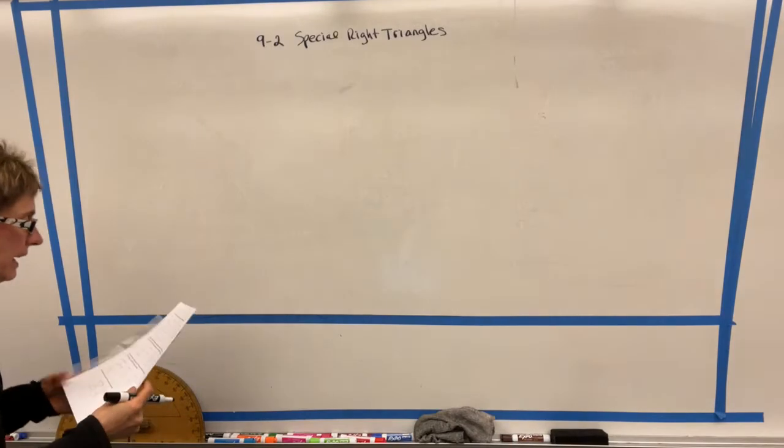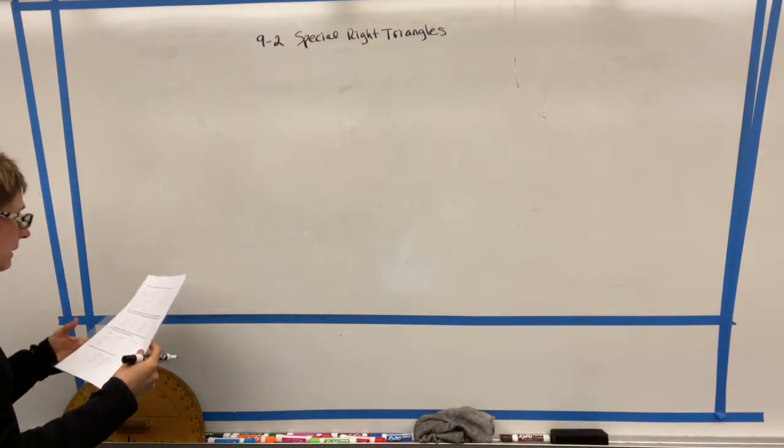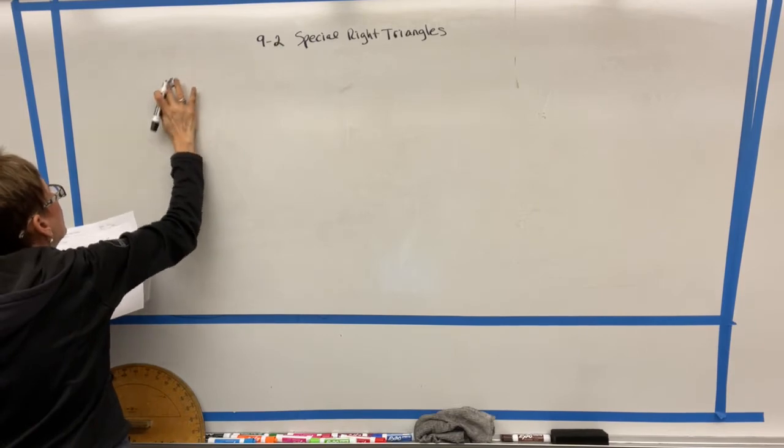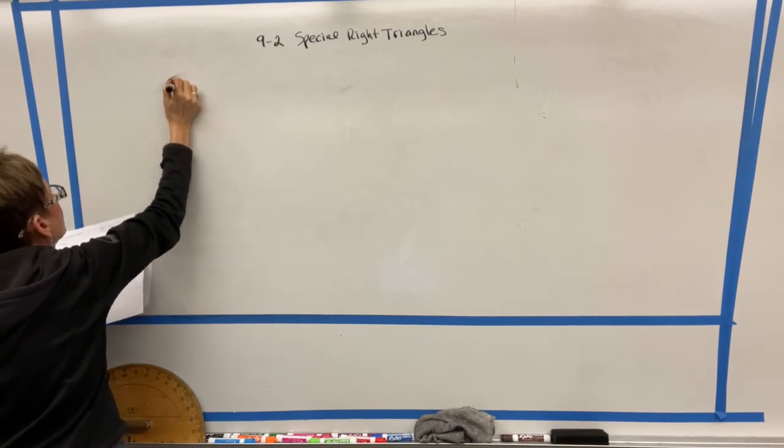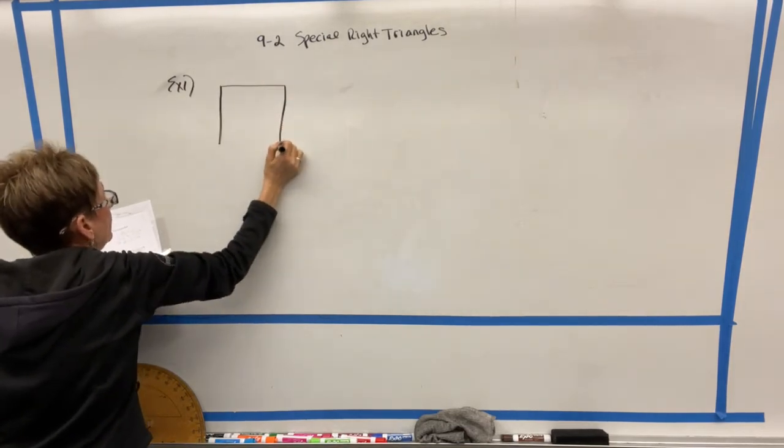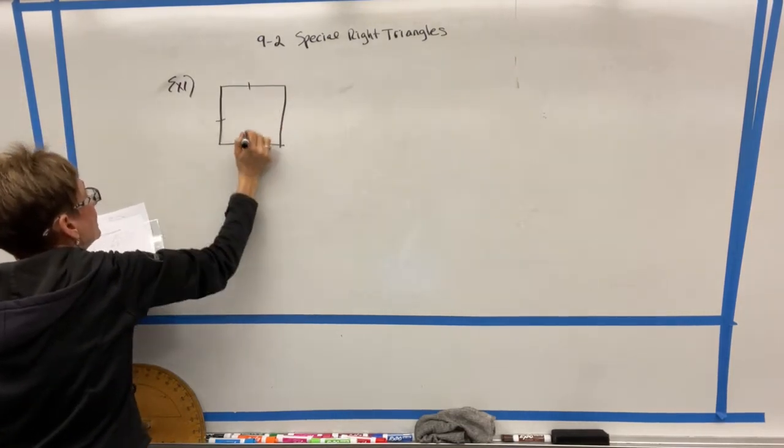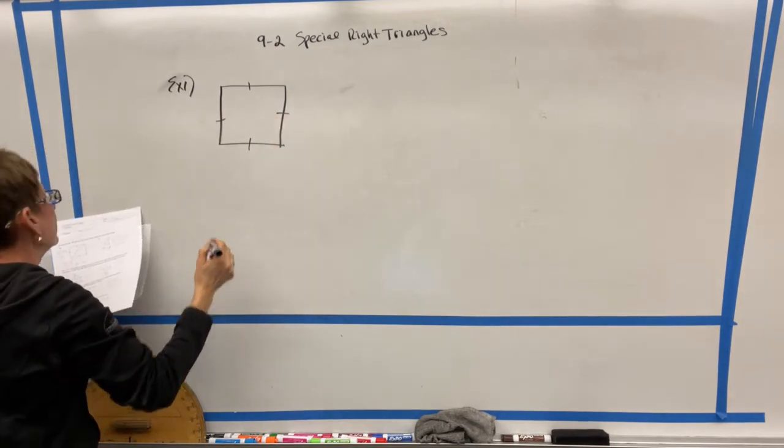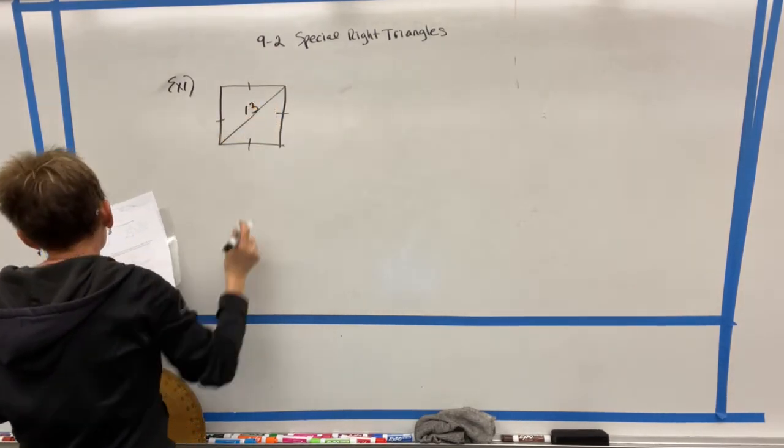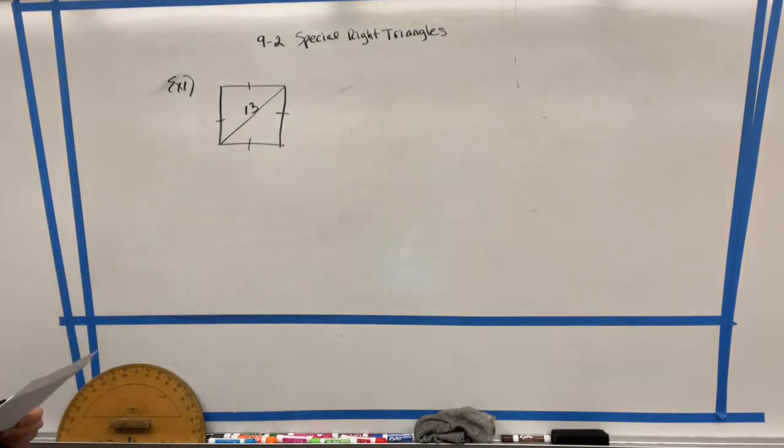So let's go ahead and find the area of the given figure. So let's take a look. Let's call this our first numbered example. Let's say that we have a square. And we know it's a square because it has four hash marks like that. And this length is 13. And the question says, find the area of the figure.